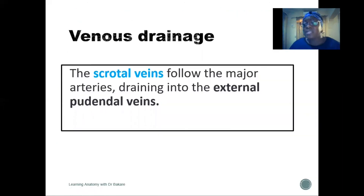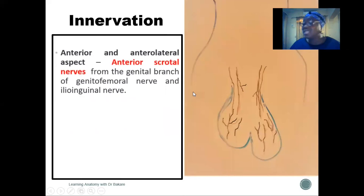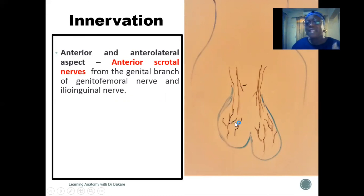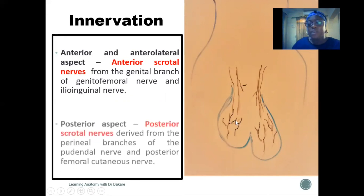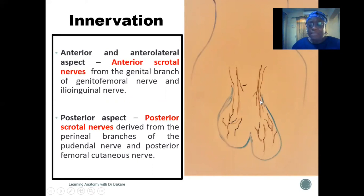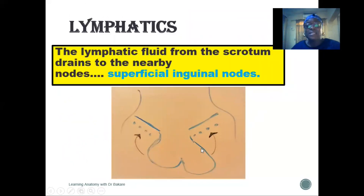Venous drainage is via the scrotal vein, which empties into the external pudendal vein. The innervation of the scrotum is extensive. The anterior and lateral aspects are innervated by the anterior scrotal nerves, emerging from genital branches of the genitofemoral nerve and ilioinguinal nerve. Posteriorly, the posterior scrotal nerve is derived from perineal branches of the pudendal nerve. Lymphatics drain into the superficial inguinal lymph nodes.